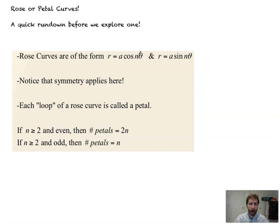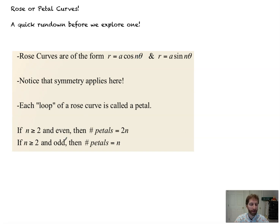That constant n has everything to do with the number of petals that a rose curve has. The a value is going to be the maximum distance that r will achieve, because cosine is at most 1, and a times 1 gives you that highest value — same with the sine. Each loop of a rose curve is called a petal. If n is even and greater than or equal to 2, you get double the number of petals: n=2 gives 4 petals, n=6 gives 12. If n is odd, you get exactly that number of petals: n=3 gives 3 petals, n=5 gives 5. With an odd number, the curve reflects back onto itself; with an even number, negative r values create additional petals.